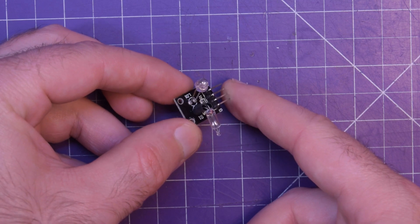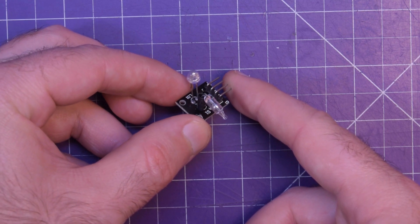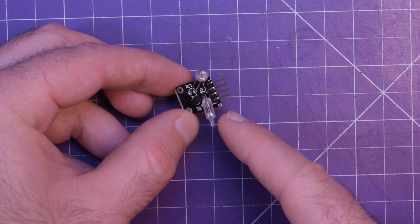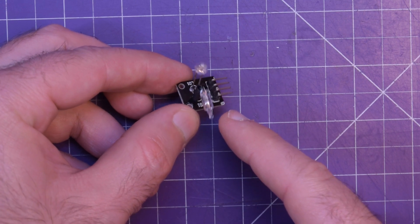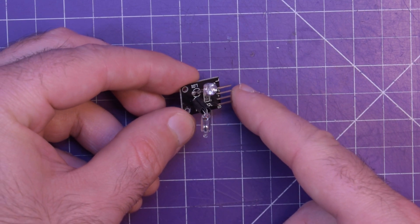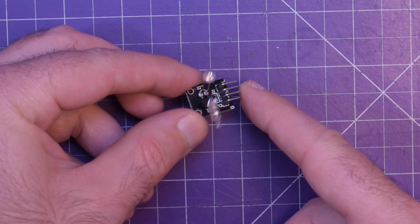This is a tilt sensor and as you can see the little ball in here is rolling back and forth and it lets you know when something has tilted or not.